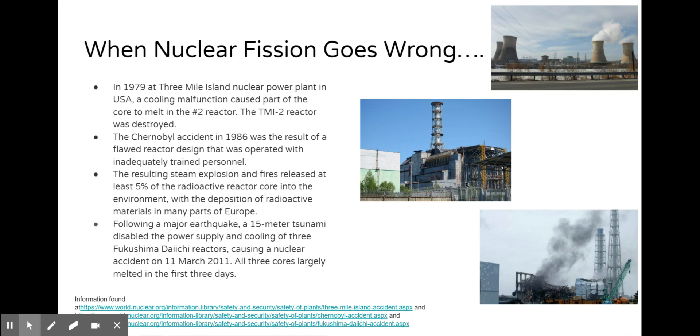In 1979 at Three Mile Island, the nuclear power plant in the United States, a cooling malfunction caused part of the core to melt in the number two reactor, and the reactor was destroyed. Nobody is allowed on Three Mile Island to this day.